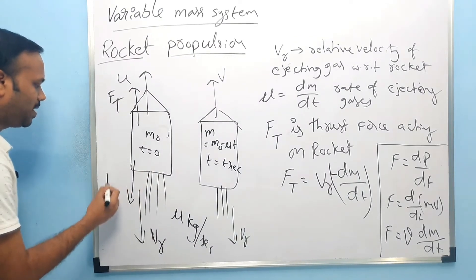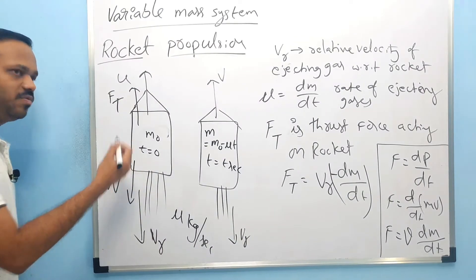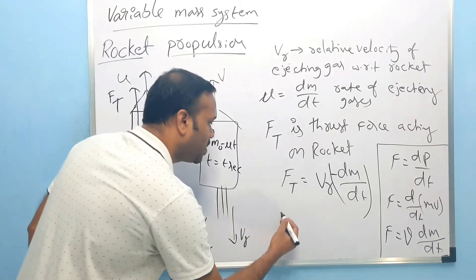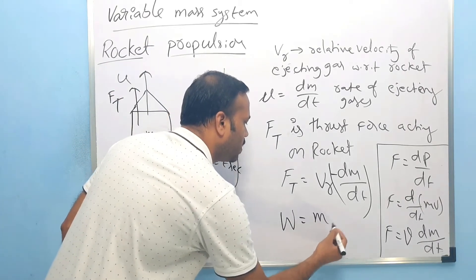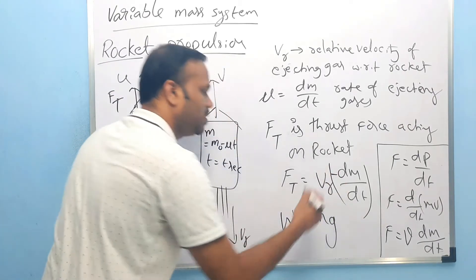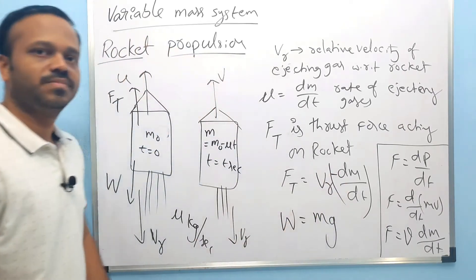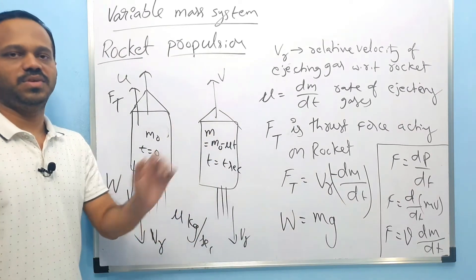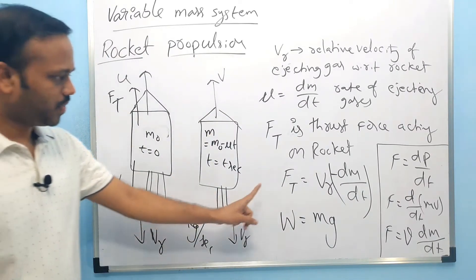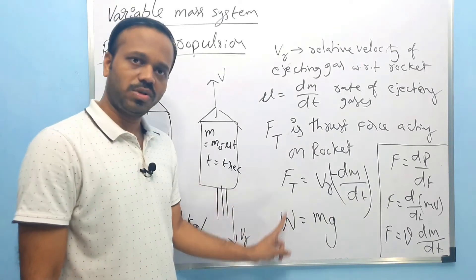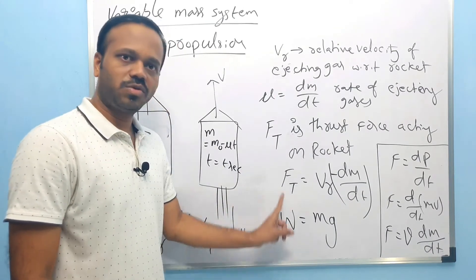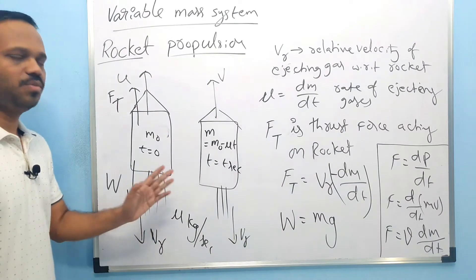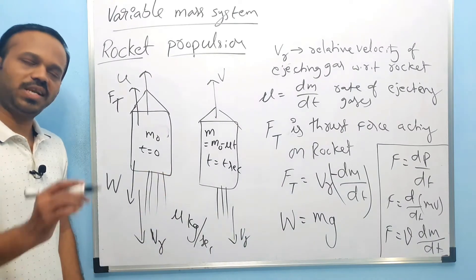There are only two forces acting on the rocket: the thrust force acting upward and the weight W = Mg of the rocket acting downward. So the net force is thrust force minus weight.